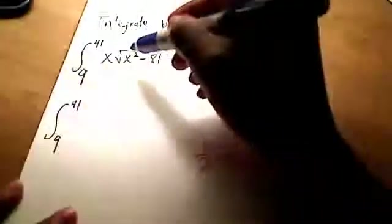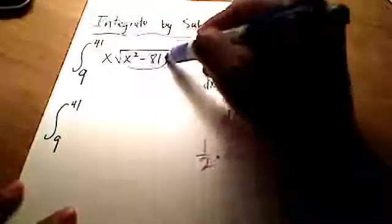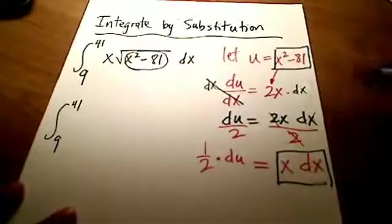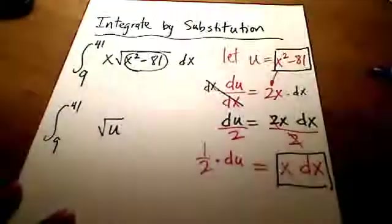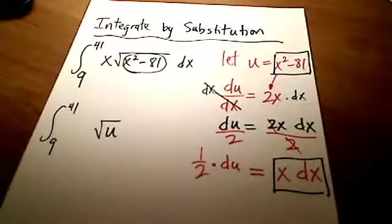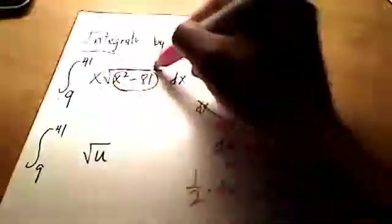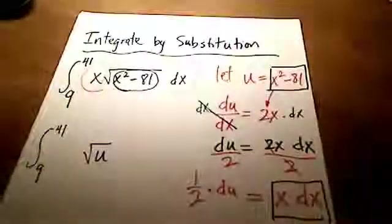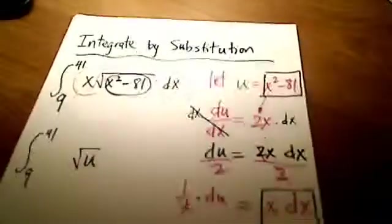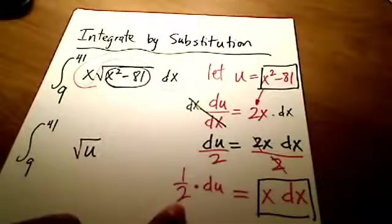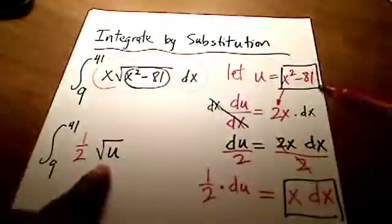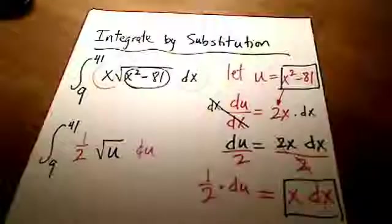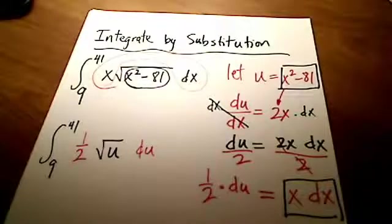And check this out. In place of x squared minus 81, I'm putting in the letter u, so I've got the square root of u. And in place of x dx, I'm going to substitute in this 1 half du. Alright, but I'm going to do it this way. I'm going to put the 1 half here in front of my square root, and I'm going to put the du after my square root. Doesn't really matter, it's all being multiplied together anyways.